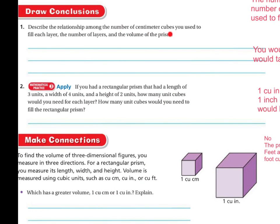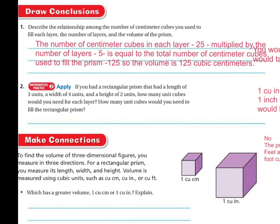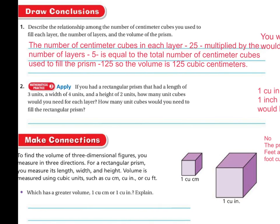Describe the relationship among the number of centimeter cubes you used to fill each layer, the number of layers, and the volume of the prism. Well, the number of centimeter cubes in each layer is 25. And if you multiply that by the number of layers, which was five, then it's equal to the total number of centimeter cubes that was used to fill the prism, 125. So the volume is 125 cubic centimeters. And again, you could write that one two five centimeters with a little cube on the top.